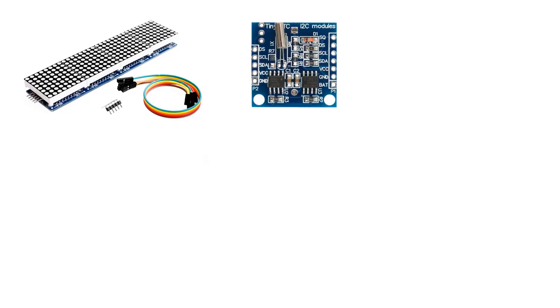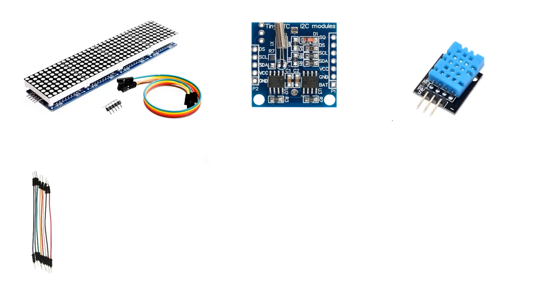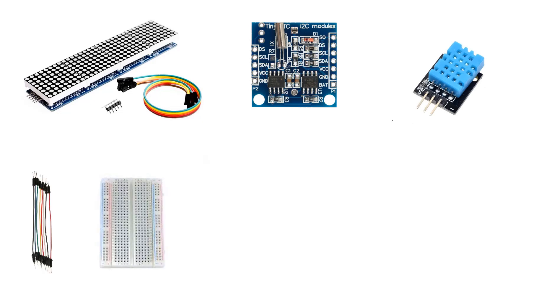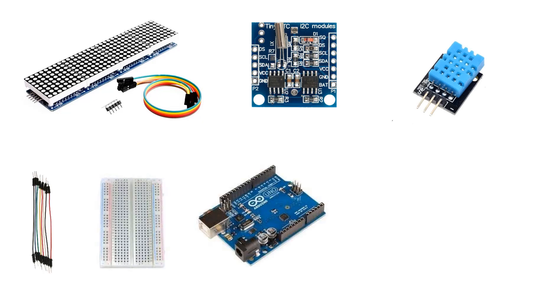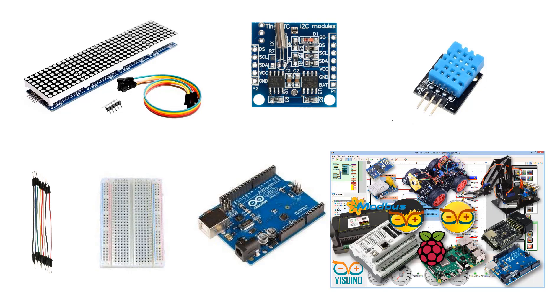For this tutorial, let me show you how to use the LED Matrix. For this project you will need the LED Matrix MAX7219, RTC DS1307 Module, DHT11 Sensor, Jumper Wires, Breadboard, Arduino, and Viswino Software.